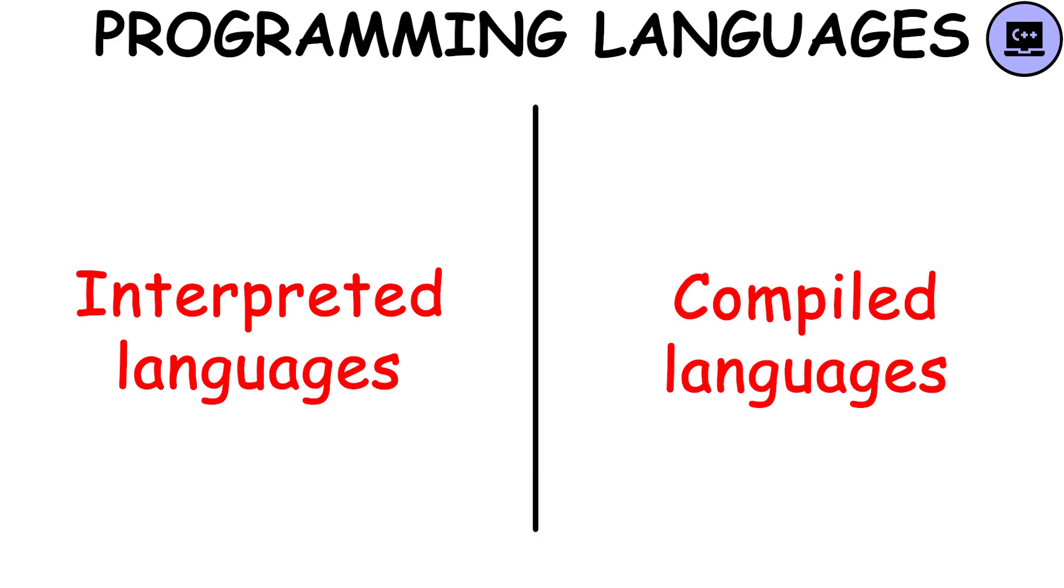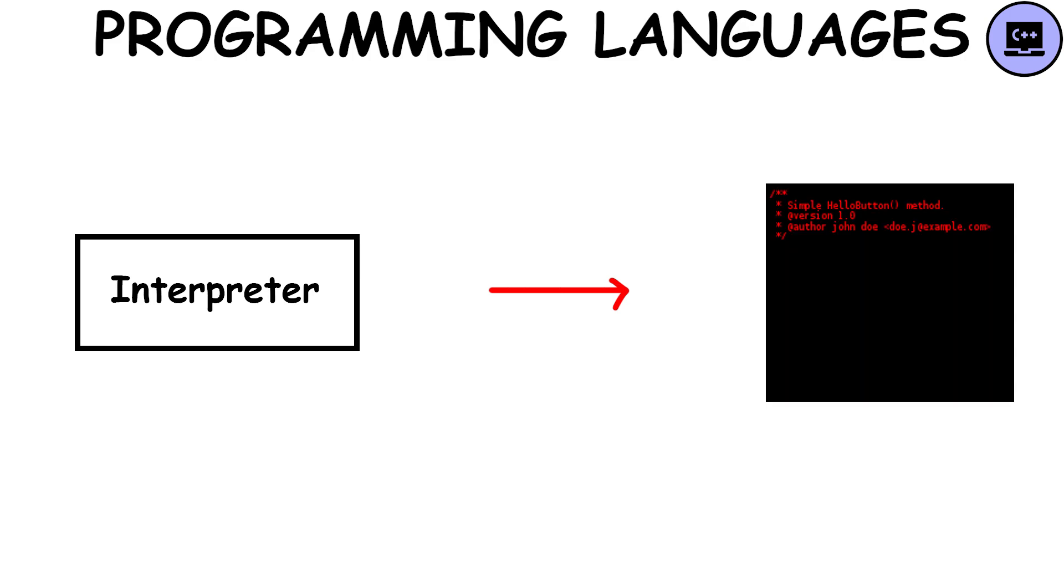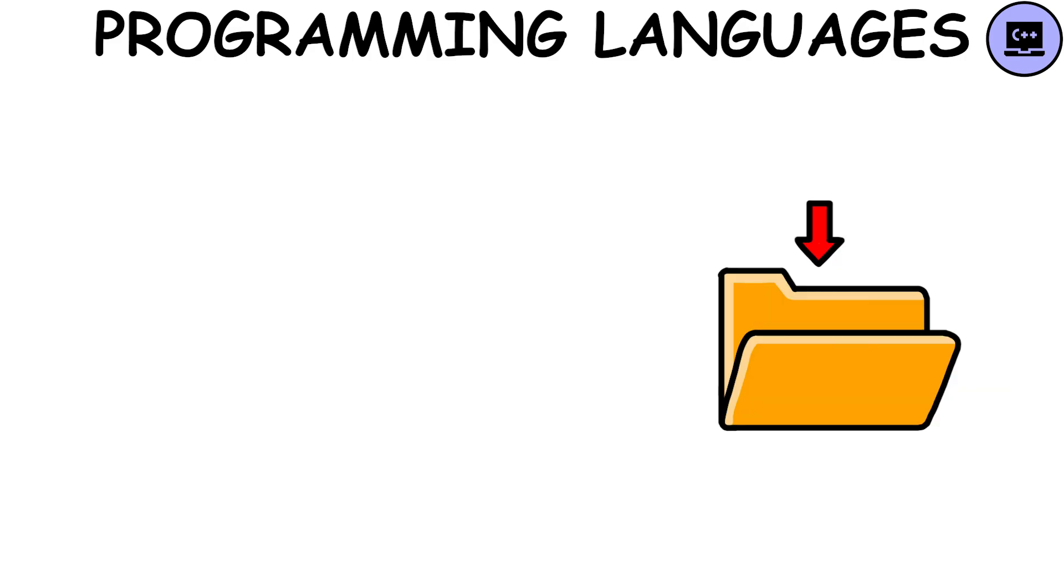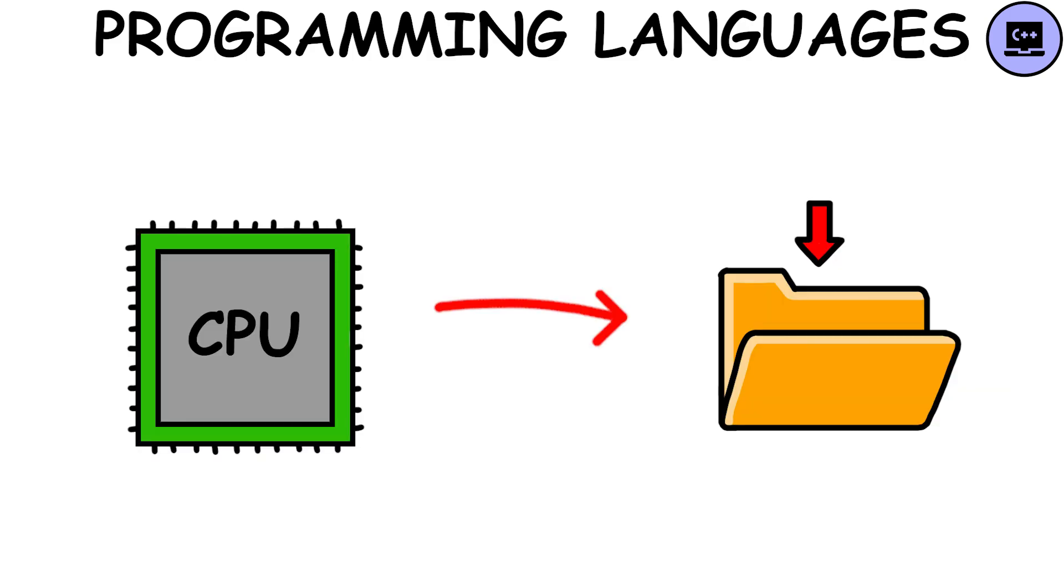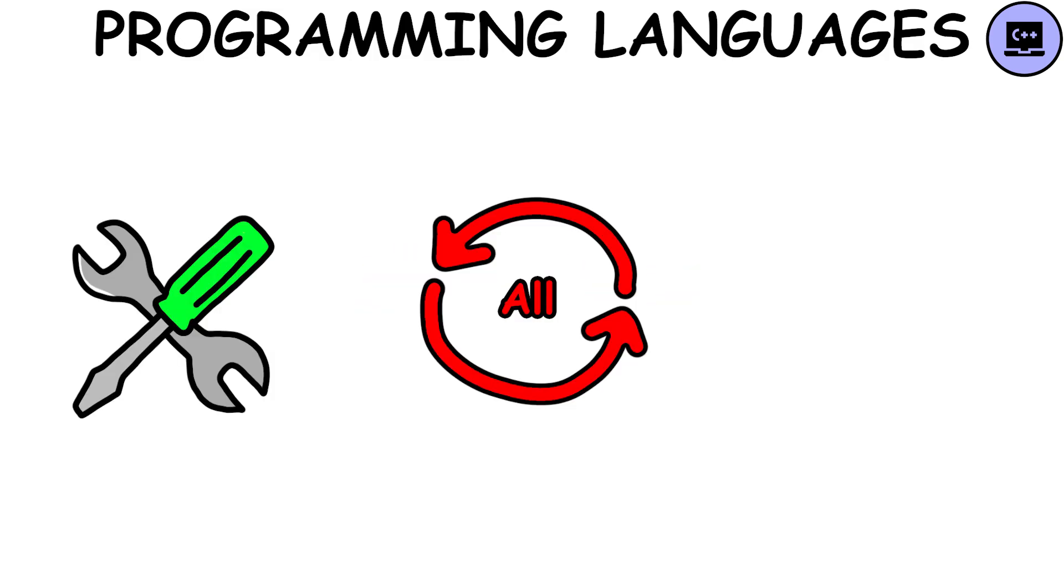Languages like Python use an interpreter, which executes the source code directly, line by line. Languages like C or Go use a compiler, which converts the entire program into machine code before putting it in a file that the CPU can execute. Every programming language has different syntax, but they all share some basic tools and concepts.